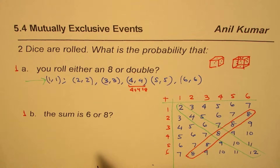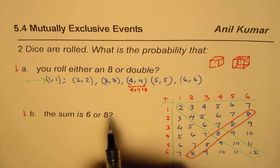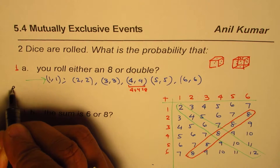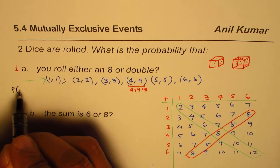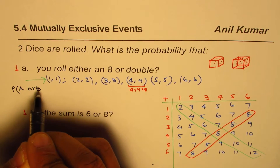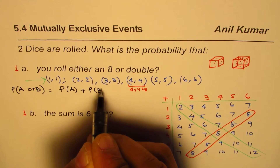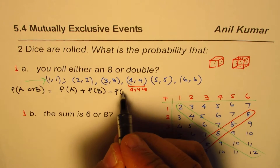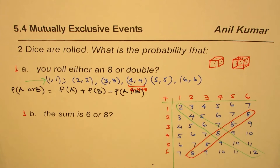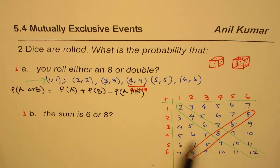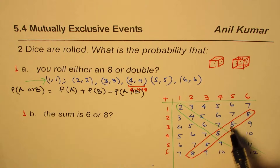For a non-mutually exclusive case, we apply the addition rule: P(A or B) = P(A) + P(B) − P(A ∩ B), where we subtract the probability of the intersection — what is common between event A and event B. Event A is getting a sum of eight.